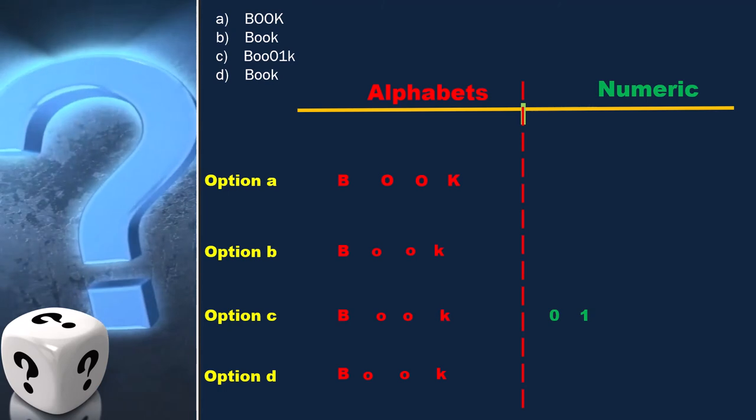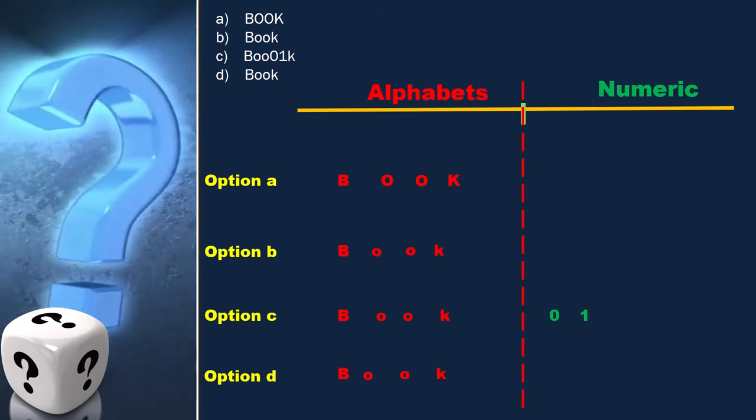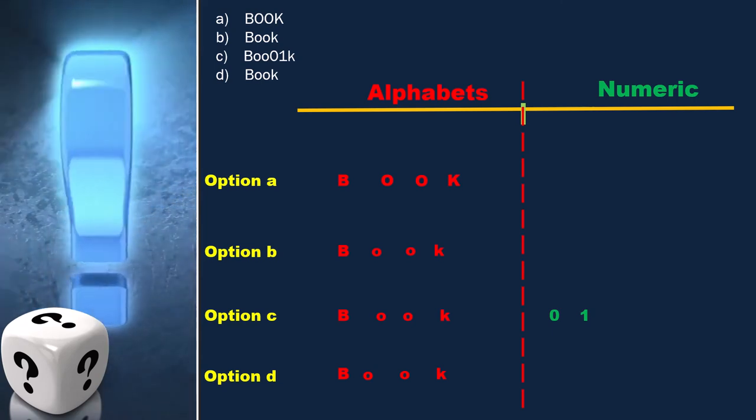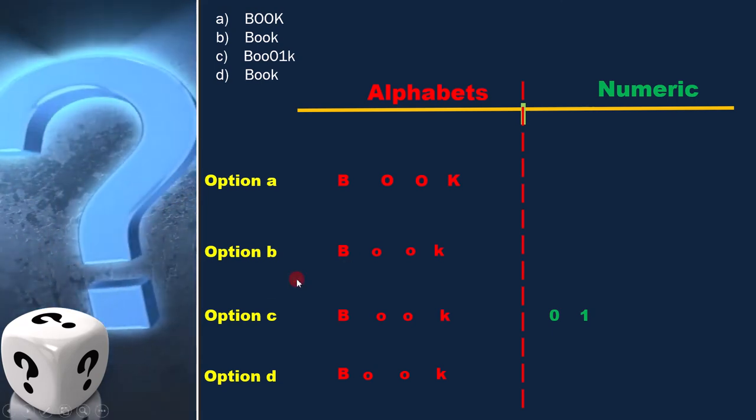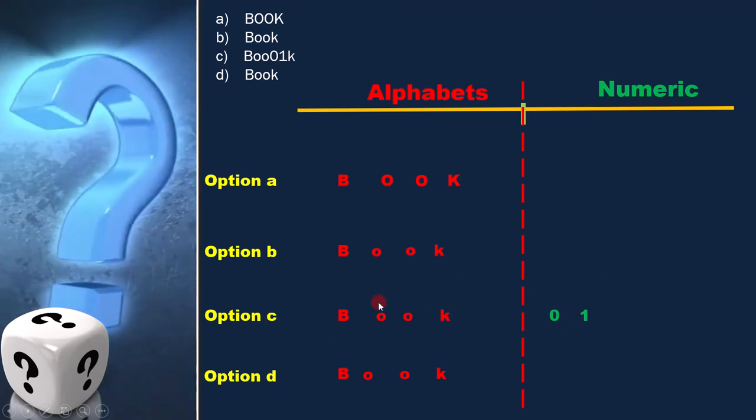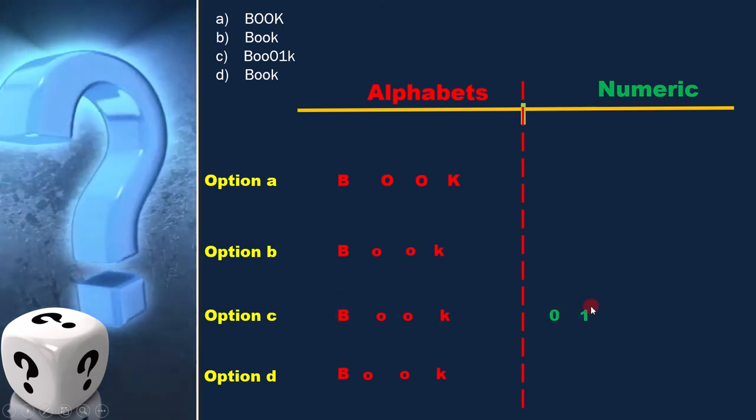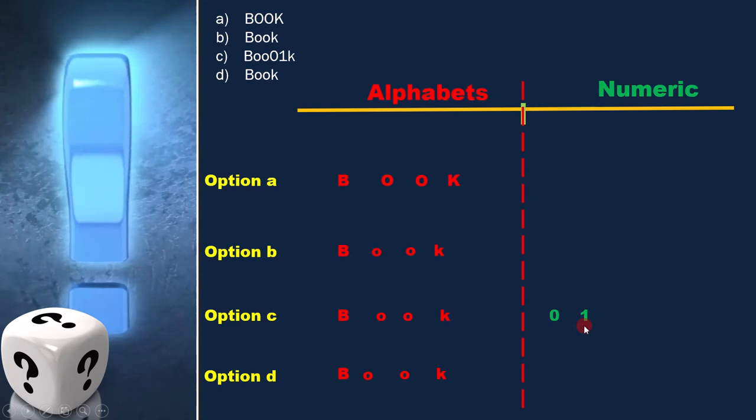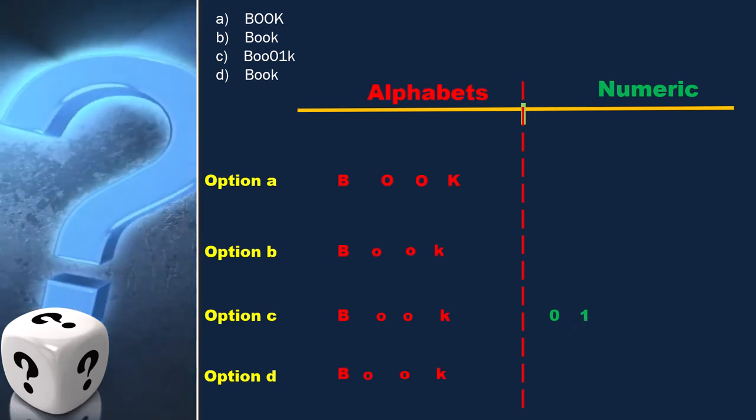Now, if we look into all the options, they all are a valid range. But now we need to select the best answer here. If we see option C, it contains both combinations, where we have capital alphabets, small alphabets, and numbers too. Therefore, option C is the answer through all the options are correct here.